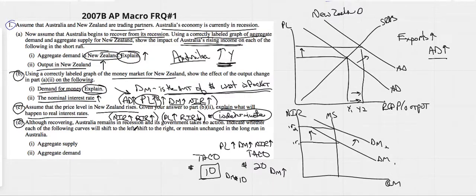Although recovering, Australia remains in a recession and its government takes no action. Indicate whether each of the following curves will shift to the left, shift to the right, or remain unchanged in the long run. So there's a couple of things that let us know that this is we're going into what we talk about as a classical view. One - no fiscal or monetary policy actions, no government actions. What happens in the long run? If we see those two phrases, we tend to know that we are talking about what's going to happen in the classical view.